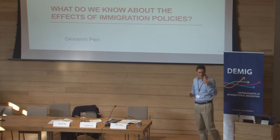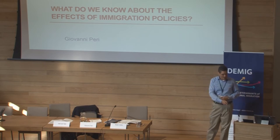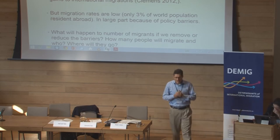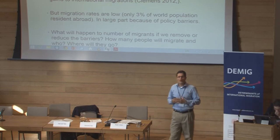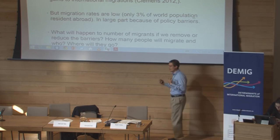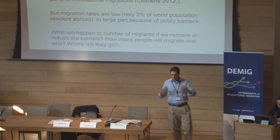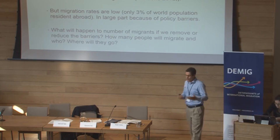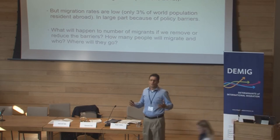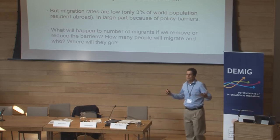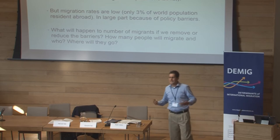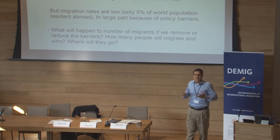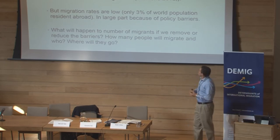Every once in a while I do some exploration on what determines immigration, and that's where I started from here. There seems to be a consensus among economists that there are huge gains from people moving across countries. There is work by Michael Clements that says there are trillions of dollars to be gained. However, if you look at migration data, very few people seem to move around — only about 3% of the world population is resident in a different country from where they were born.